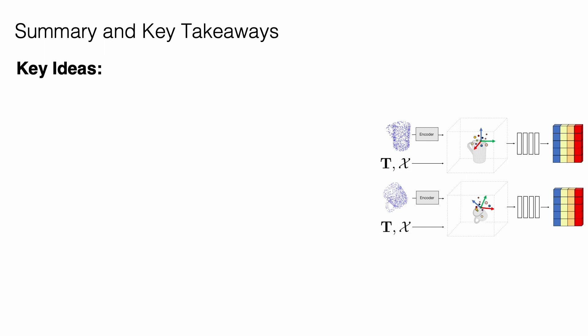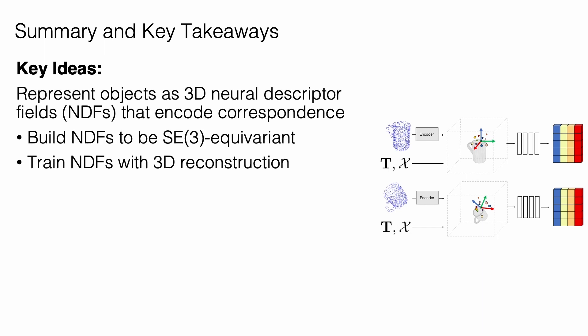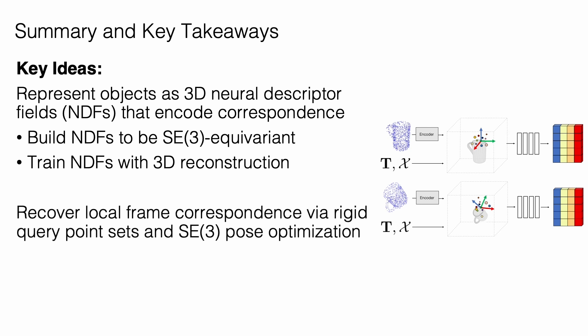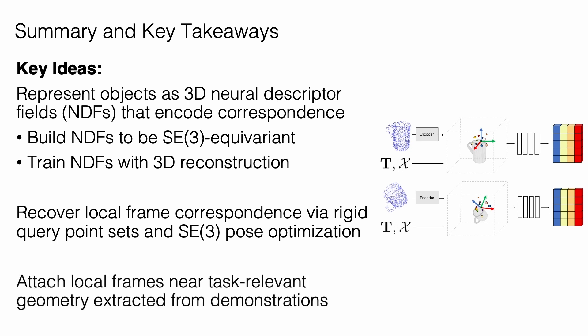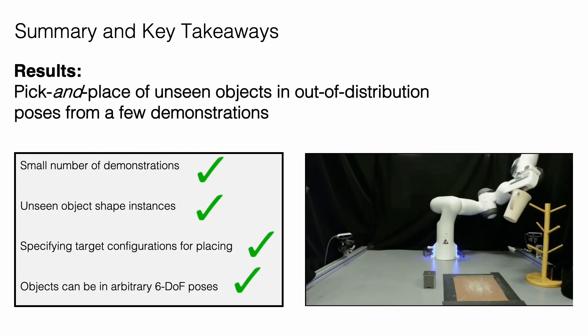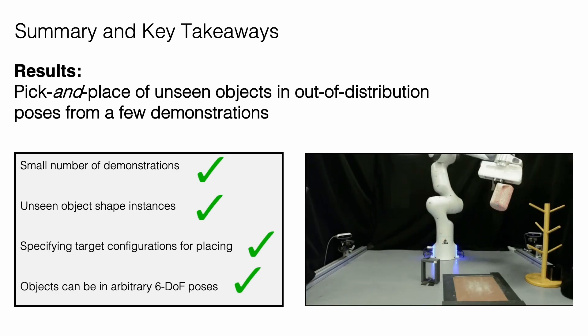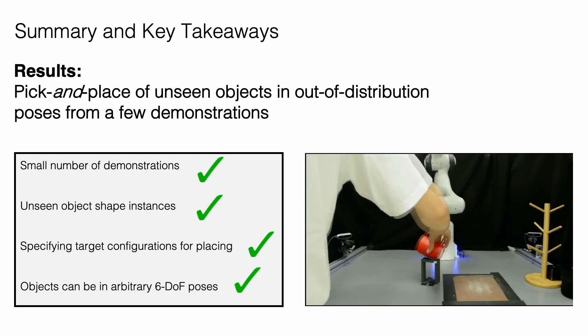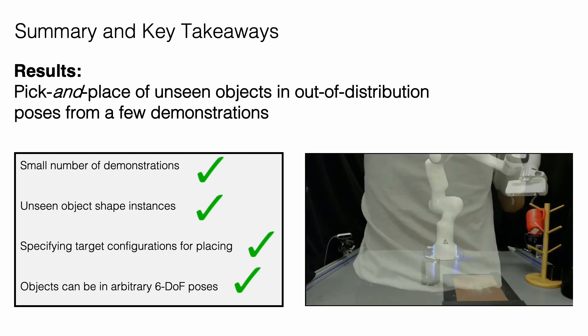In summary, we propose neural descriptor fields, a novel representation that models objects as 3D neural fields of descriptors. These descriptors encode correspondence across shapes, are trained via self-supervised 3D reconstruction, and are SE3 equivariant. These descriptor fields allow us to correspond local coordinate frames attached to task-relevant geometry across objects, and to obtain the task-relevant geometric features directly from demonstrations. Finally, we show that we can use neural descriptor fields to overcome the set of challenges outlined at the beginning of the talk, and perform pick-and-place on unseen objects in out-of-distribution poses from just a few demonstrations.